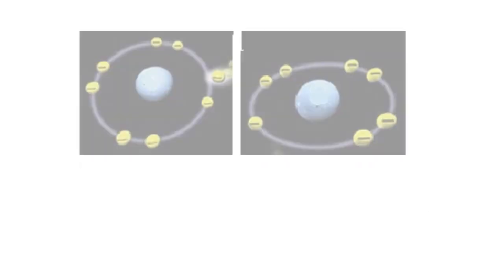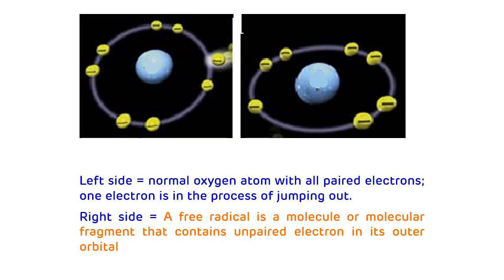This picture shows the normal oxygen atom with all paired electrons, and one electron is in the process of jumping out. This is the picture of a free radical — a molecule or molecular fragment which contains one or more unpaired electrons in its outer orbit. This is the normal oxygen atom versus the free radical with one unpaired electron in its outer orbit.